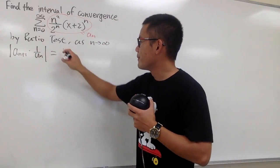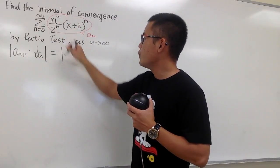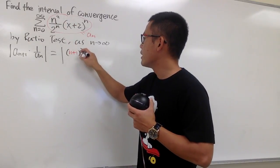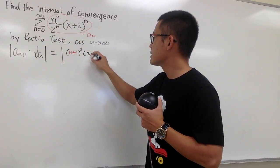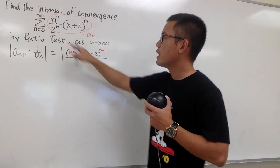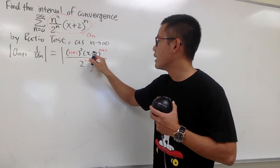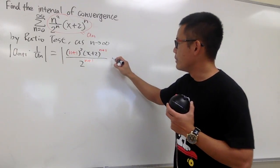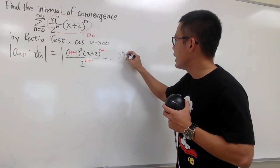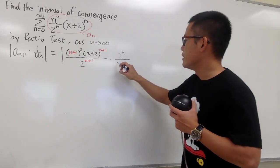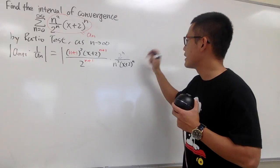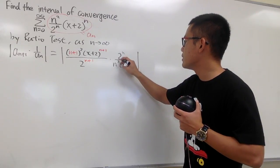Plugging n+1 into all these n's, we will have (n+1) squared, and then this is going to give us (x+2) to the n+1 power over 2 to the n+1 power. And we multiply by the reciprocal of the original — 2 to the n over n squared times (x+2) to the n — inside of the absolute value.